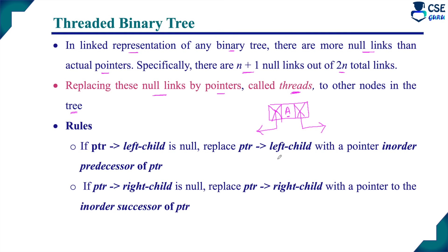How to construct a threaded binary tree? The rules are: if a pointer to the left child is null, replace it with a pointer to the in-order predecessor of that node. If a pointer to the right child is null, replace it with a pointer to the in-order successor of that node. So, the left child pointer connects to the in-order predecessor, and the right child pointer connects to the in-order successor.